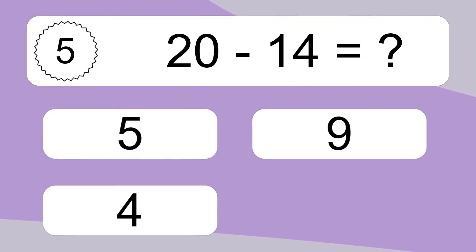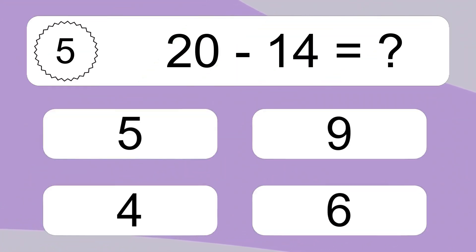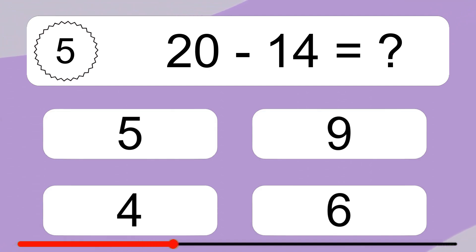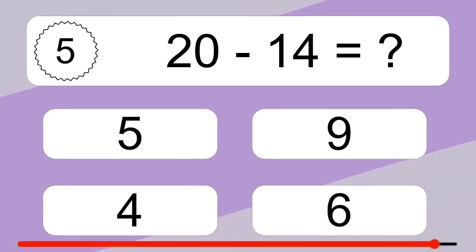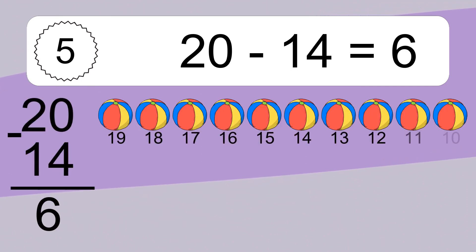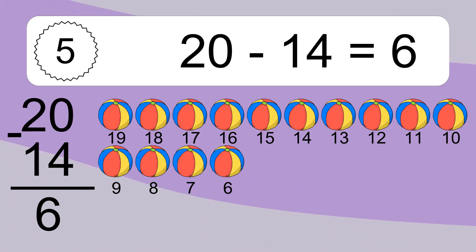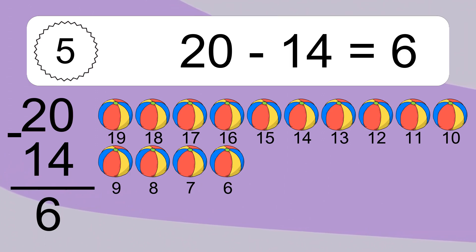20 minus 14 equals what? 20 minus 14 equals 6. Let's count it. 19, 18, 17, 16, 15, 14, 13, 12, 11, 10, 9, 8, 7, 6.